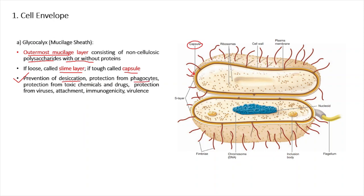The functions of glycocalyx are very important. First is prevention from desiccation — because of this mucilaginous covering, water cannot easily evaporate from the bacterial cell. Second is protection from phagocytes, acting as an extra protective layer. Third is protection from toxic chemicals and drugs, preventing them from acting on the bacterial cell. Fourth is protection from viruses such as bacteriophages. Other functions include attachment to surfaces, immunogenicity, and virulence.